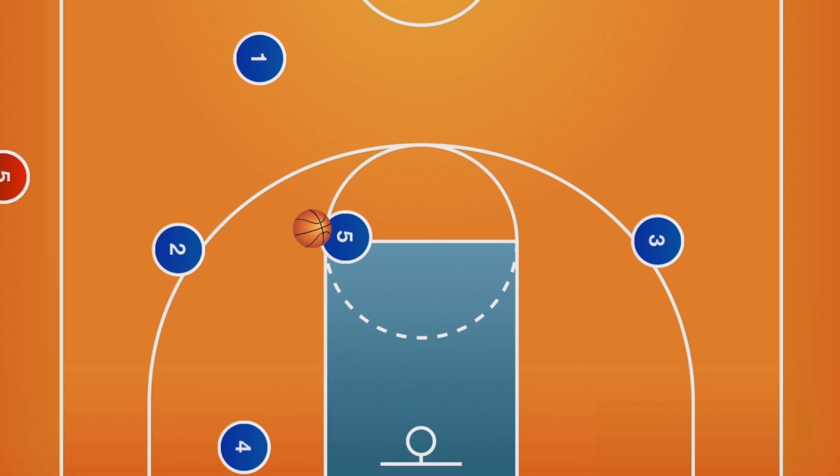Let's say the pass goes to the high post. Player 5 will turn and face, looking to score. If nothing is there, their first look is to the short corner. If the ball goes to the short corner, the high post should dive to the hoop.